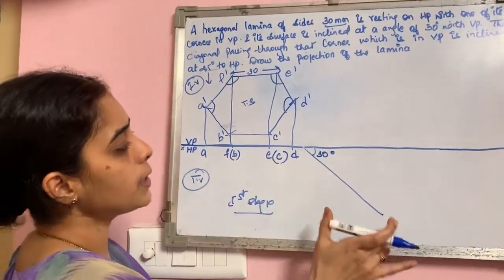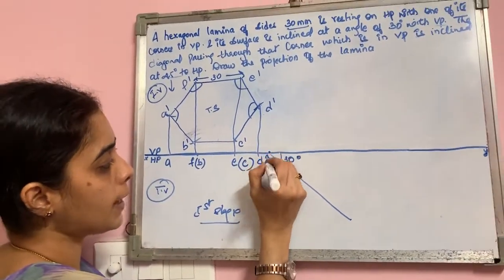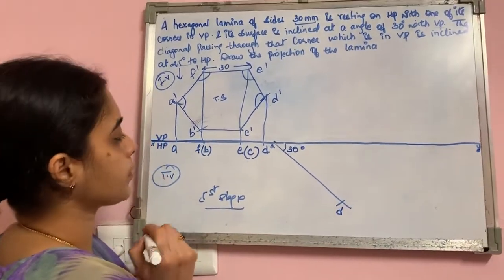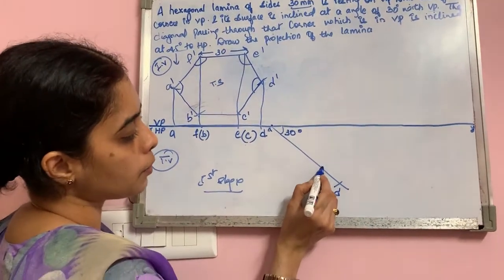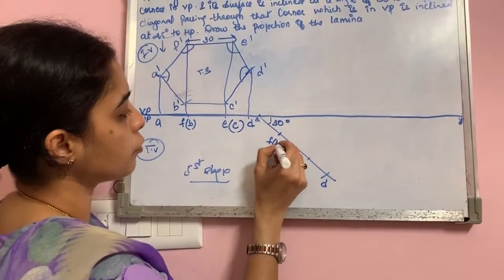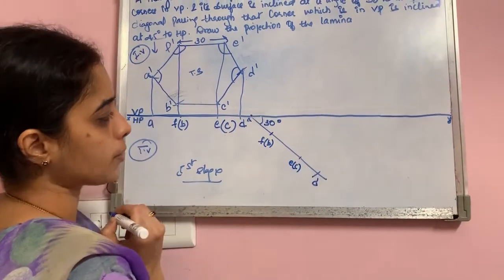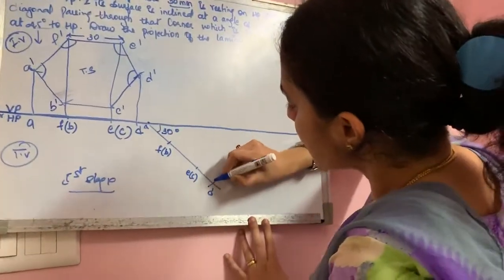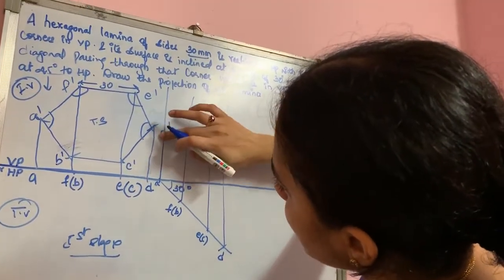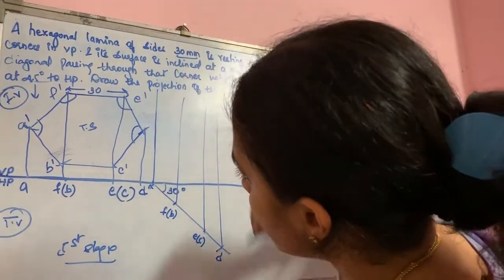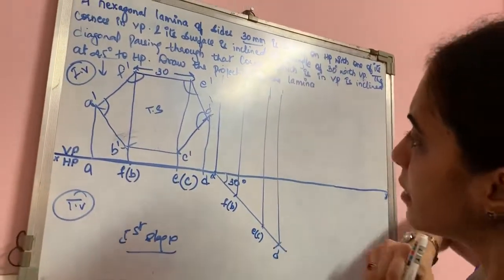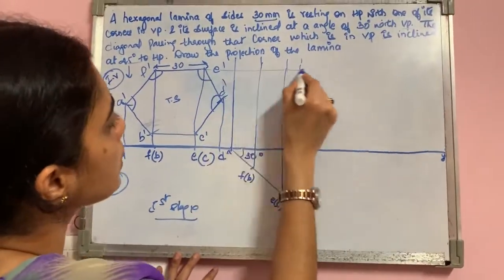Now this surface has to be inclined. Fix one end and name this as point A. Measure from A to D and cut an arc; name it as D. Then from D to E, measure how much and make a point. From A to F, measure how much and make a point. Name this as F of B and E of C. After this the procedure is the same. Take the projection above to our front view. Do the naming properly and leave spacing so that it won't get overlapped.